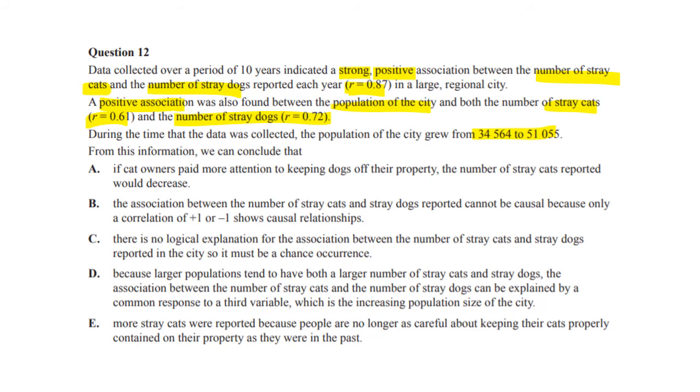Now, let's have a look at the first one. If cat owners paid more attention to keeping dogs off their property, the number of stray cats reported would decrease. That just sounds silly. The association between the number of stray cats and dogs reported, can it be causal because only a correlation of plus one or minus one? Look, plus one minus one are very rare in real life. That means the dots are exactly on the line. Doesn't happen. That's nonsense. You can have a correlation. I mean, 0.87 is quite a good one. Even 0.61 and 0.72 are very good, strong causal relationships. There is no logical explanation for the association. Well, they've talked about the city thing. So, okay, that one's wrong. Because larger populations tend to have both the larger number of stray cats and stray dogs. The association between the number of stray cats and the number of stray dogs can be explained by a common response to a third variable, which is the increasing population size of the city. That's fairly obvious. And I think a lot of people got this right because the other ones were just nonsense.